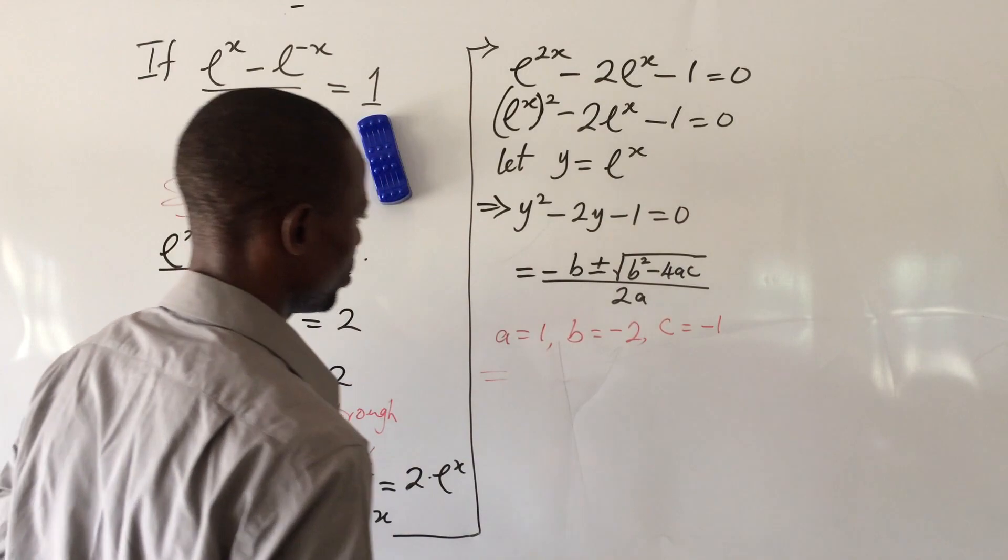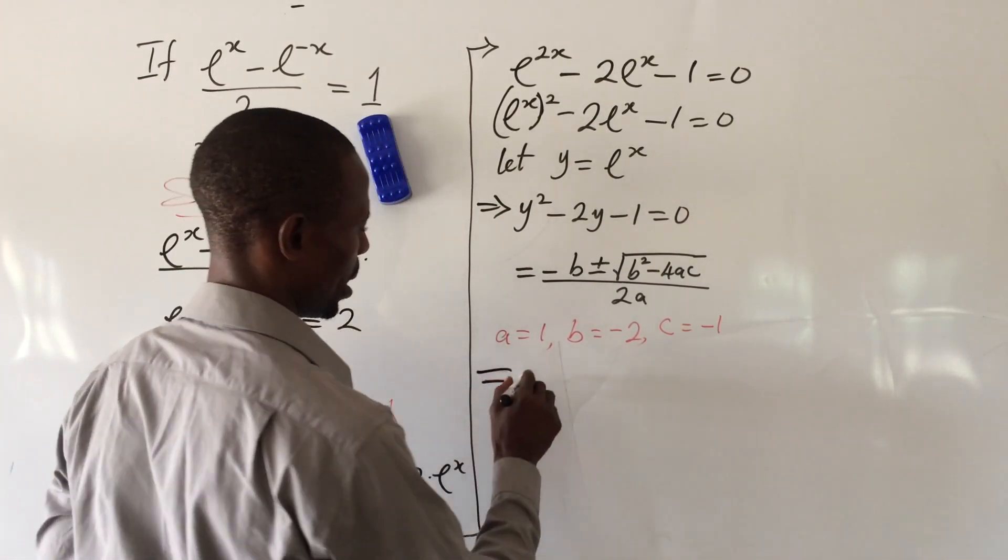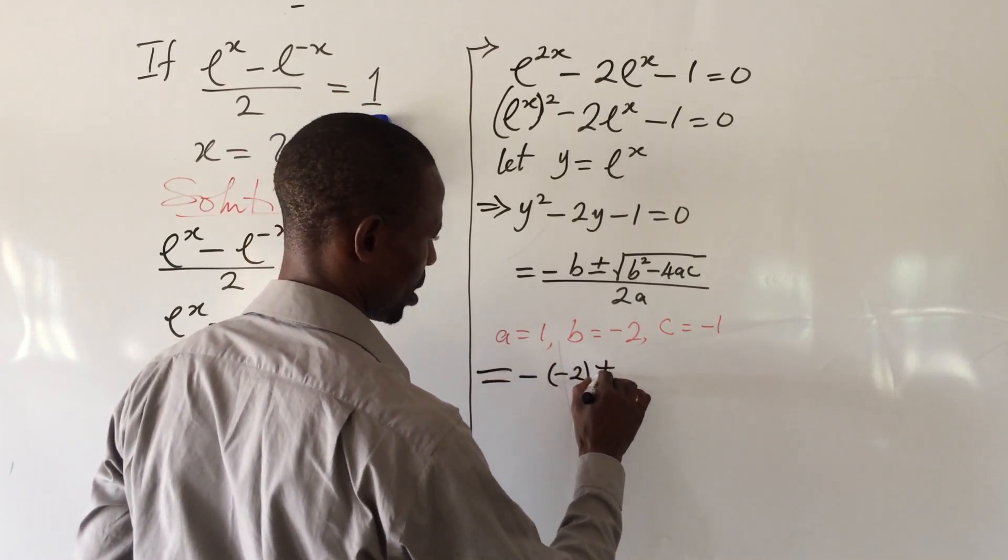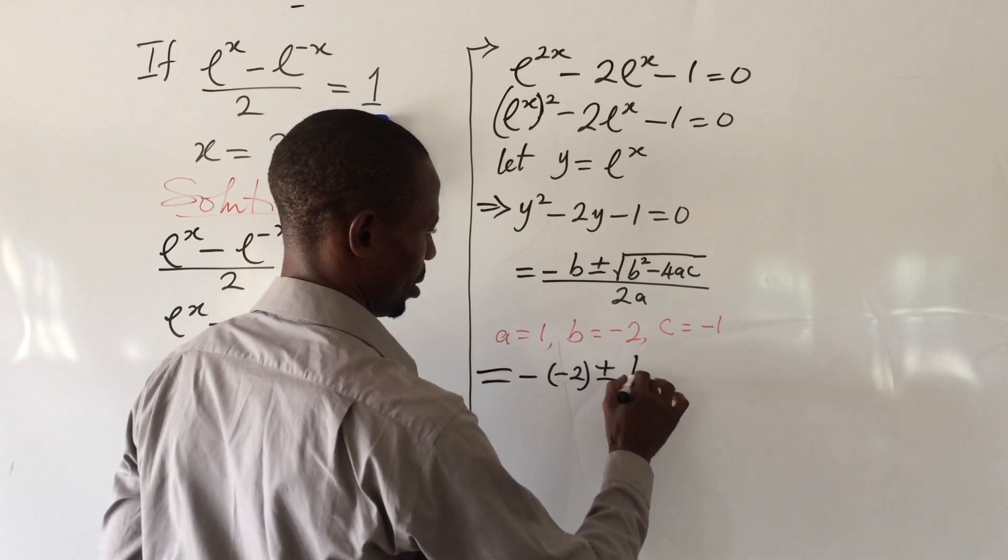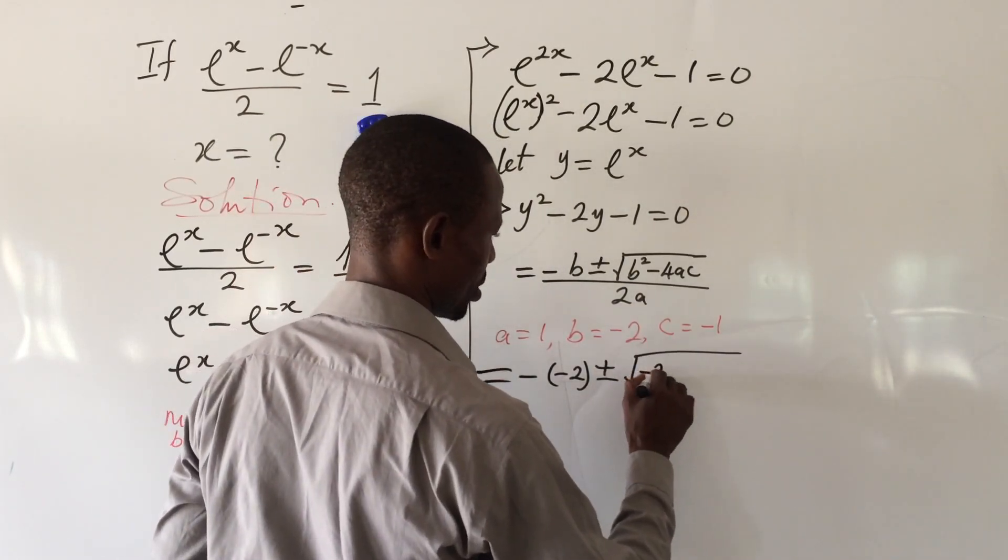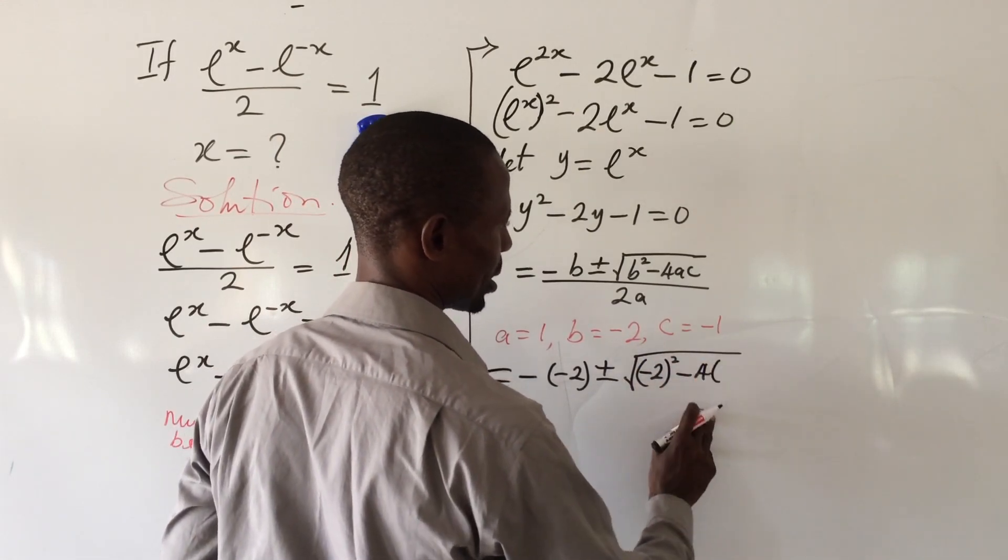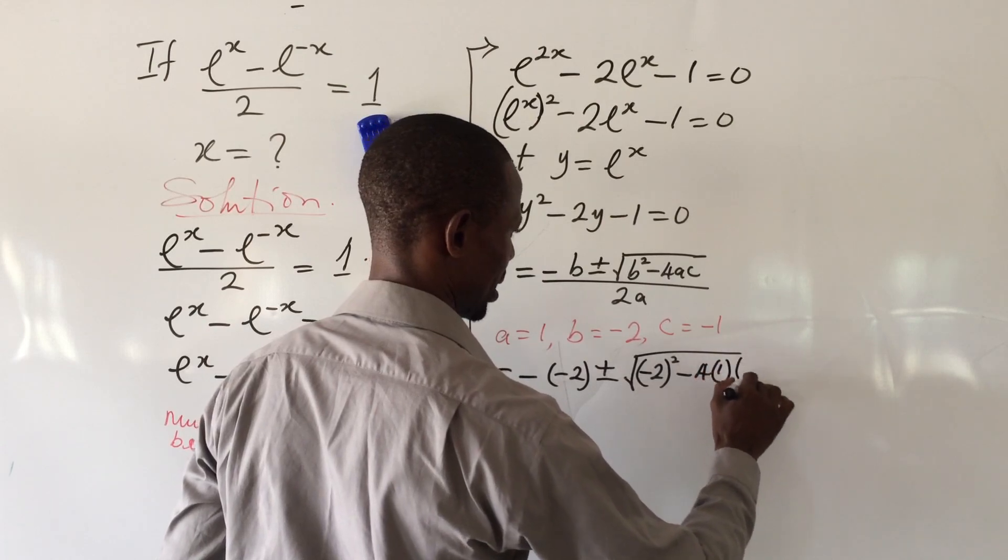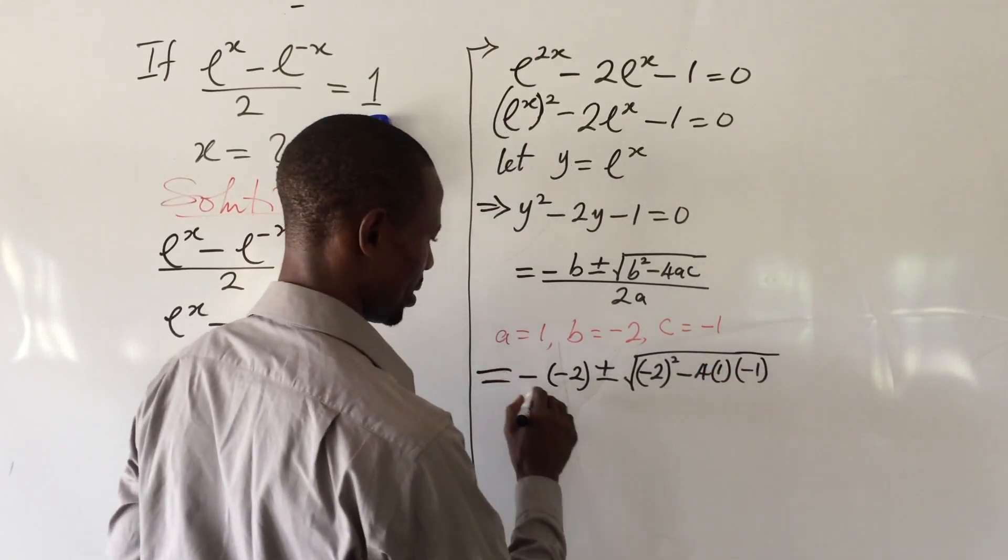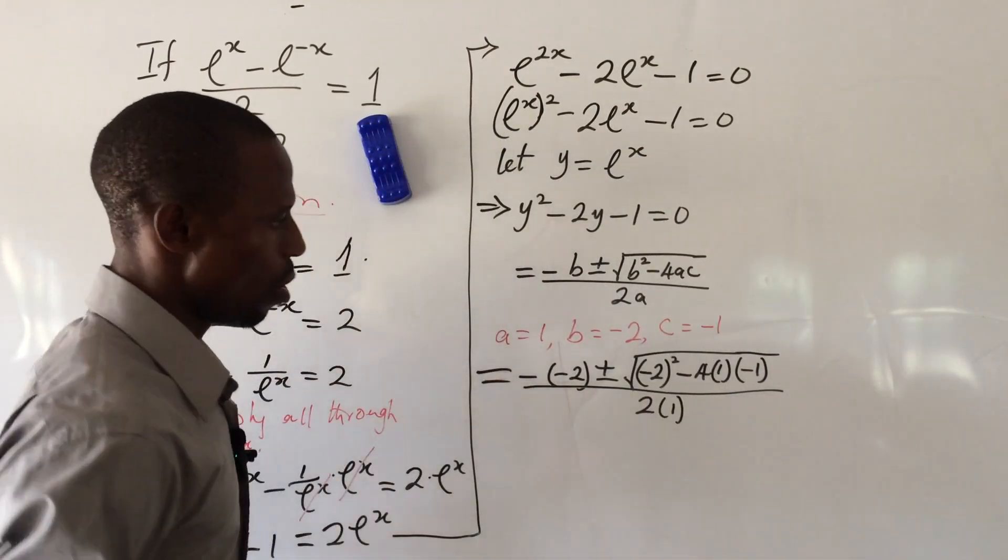If we input this into our formula, this becomes minus bracket minus 2, close bracket, plus minus the square root of minus 2 squared minus 4 bracket 1 bracket minus 1, close bracket, all over 2 bracket 1.